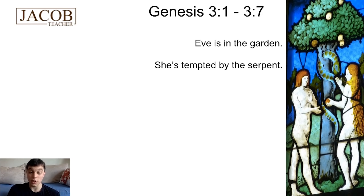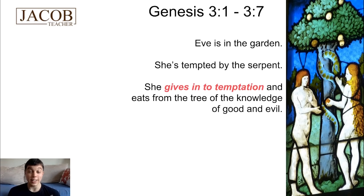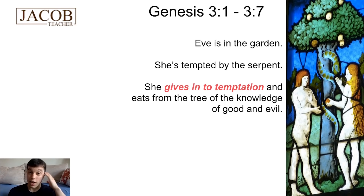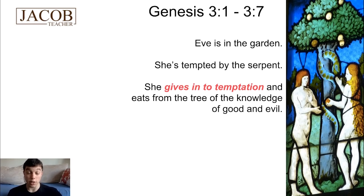Eve is tempted by a serpent to eat from the tree of the knowledge of good and evil, and Eve gives into temptation and eats from it. I have 'gives into temptation' in a different colour because I wanted to explain that phrase — it's useful and you'll hear it often in English. If you give in to something, that phrasal verb 'give in' means to stop fighting, to stop resisting. For example, if I'm on a diet and trying not to eat chocolate, but eventually I say 'whatever' and go get a chocolate bar, I could say I gave in to temptation. I was tempted, I stopped resisting, and I went and had a delicious chocolate bar.